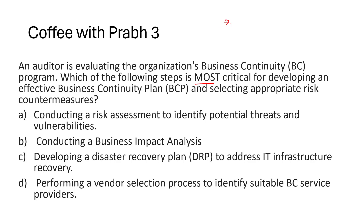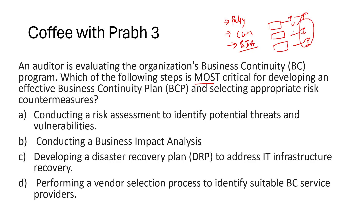When talking about BCP, the first step is policy, then creating a committee. The third step is BIA — Business Impact Analysis. In a crisis, it's not possible to protect everything, so BIA helps you prioritize what is important. We first identify threats, then vulnerabilities associated with the business, then identify the impact, and then prioritize which impact needs to be addressed first. Risk assessment only identifies threats and vulnerabilities — it won't give you the level of impact. BIA is the most important part.